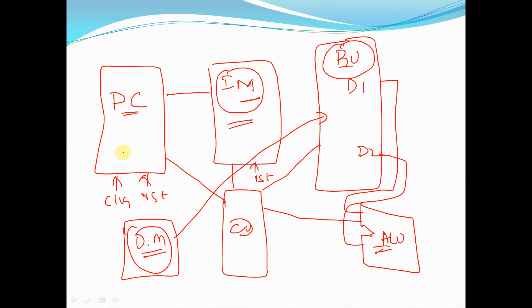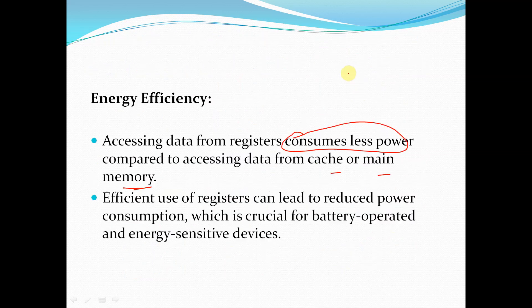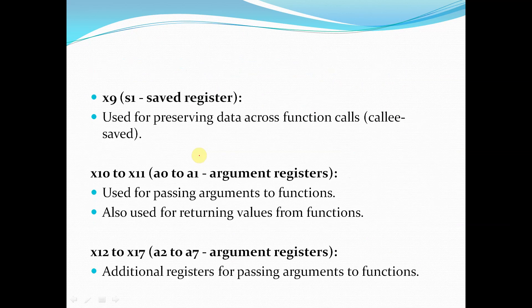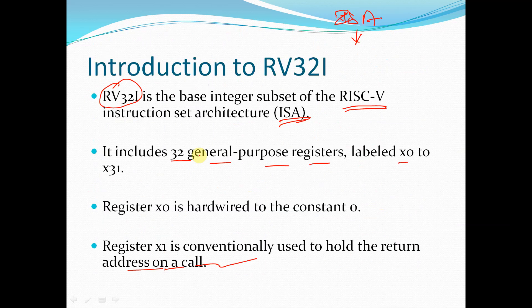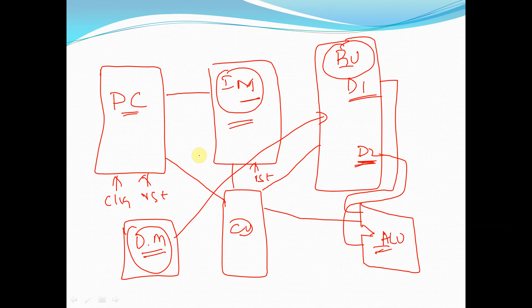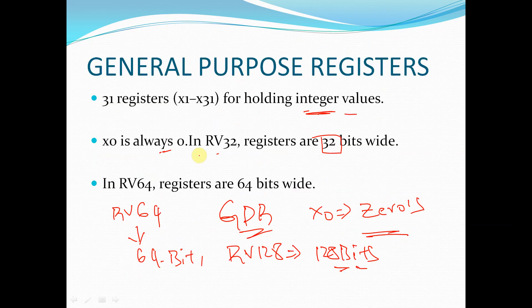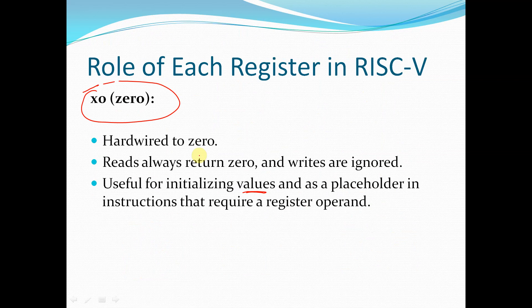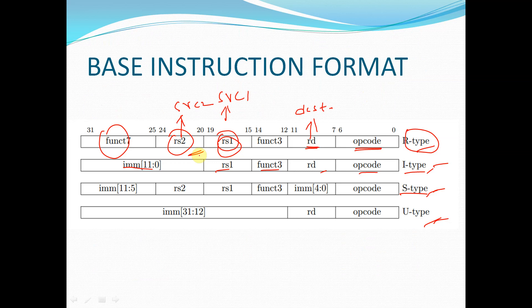Before wrapping up, from the register unit the two data outputs will be given to the ALU. In today's session we have seen: the introduction to RV32I, a brief introduction to the RISC-V architecture and its components, what we are going to design, the introduction to general purpose registers, the roles of these registers, and a brief intro to instruction formats. We will discuss instruction formats in much more detail in our next session.